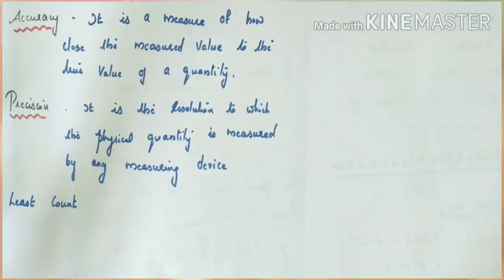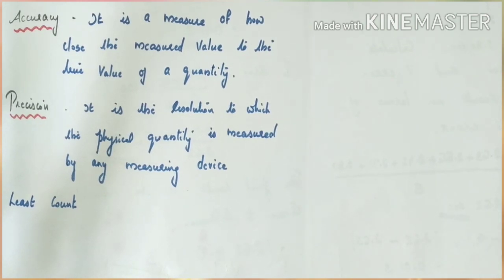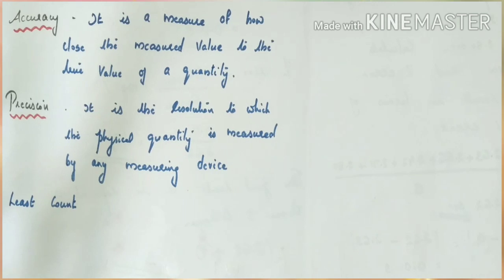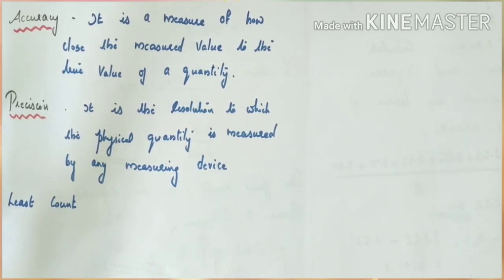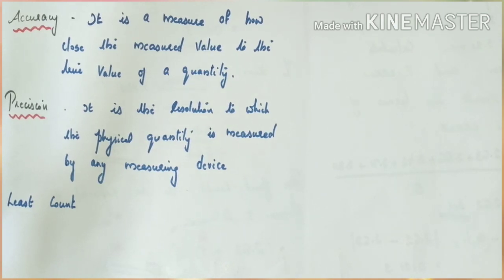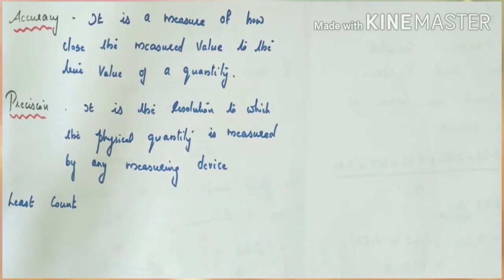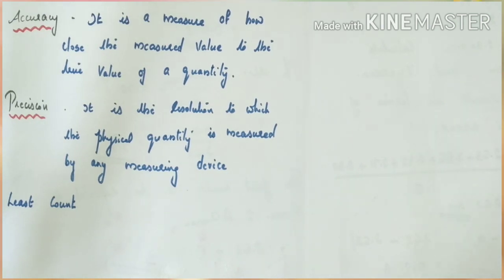Now what is least count? Least count is the minimum reading that can be measured — the minimum division of a measuring device. For example, for a meter scale, the minimum reading that can be measured is 0.1 centimeter, that is one millimeter. So the least count of a meter scale is 0.1 centimeter.